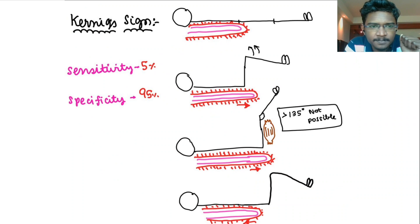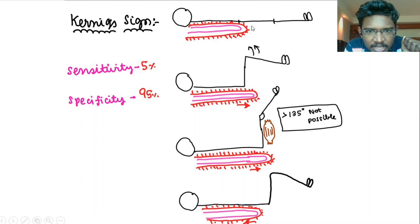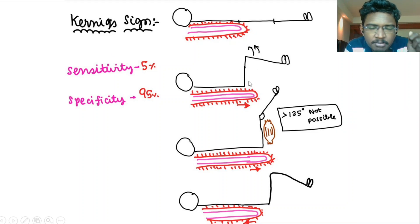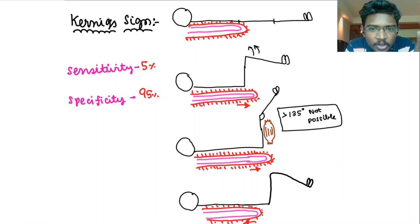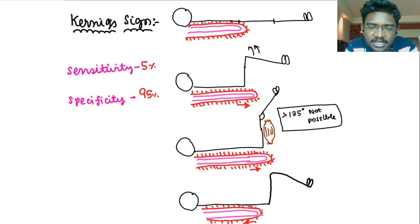First, let us see Kernig sign. The meninges is inflamed here. What are we trying to do? We are going to stretch the meninges by doing hip flexion as well as extending the knee. Since the hamstrings are in a contracted state, it will never allow you to extend the knee more than 135 degrees. If that is the case, then it is Kernig sign positive. It has low sensitivity but specificity is very high — 95 percent.